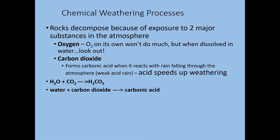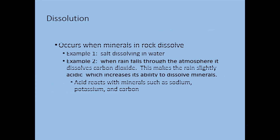The pH scale goes from 0 to 14, with 7 being neutral; anything less than 7 is acidic and anything higher is basic. The natural pH of rain that reaches the earth's surface is about 5.4 — slightly acidic — and this causes dissolution. Minerals will dissolve, just as salt dissolves in water. As this rain moves through the atmosphere and picks up more acidity through the soil, it reacts with sodium, potassium, carbon, and especially calcium carbonate — limestone.